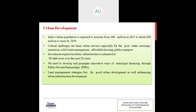According to the 12th Five-Year Plan, India's urban population is expected to increase from 400 million in 2011 to about 600 million or more by 2030. Critical challenges include basic urban services — especially for the poor — water, sewerage, sanitation, solid waste management, affordable housing, and public transport. Investment required in urban infrastructure is estimated at 6 lakh crore over the next 20 years, requiring innovative municipal financing through public-private partnerships and land management strategies.